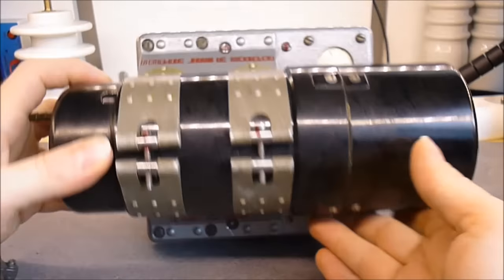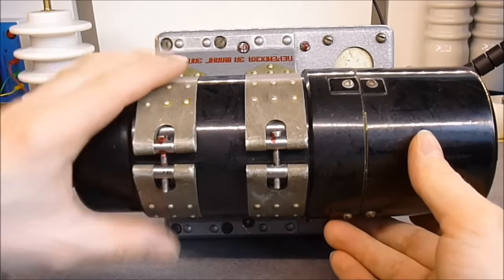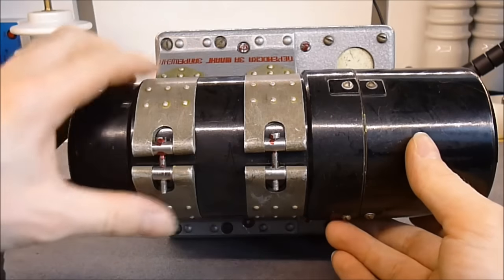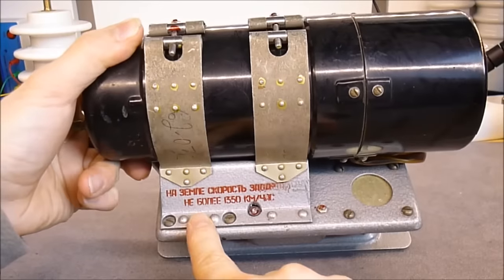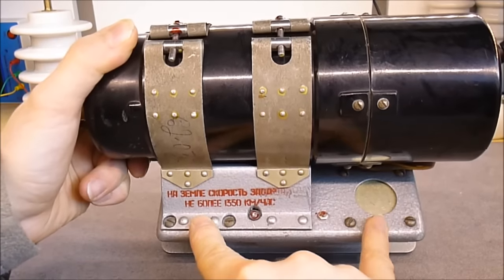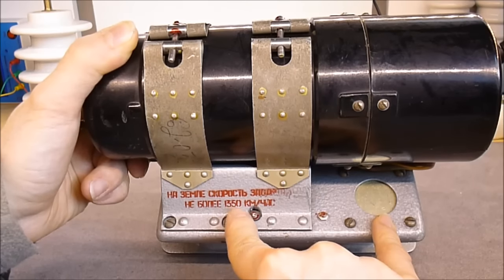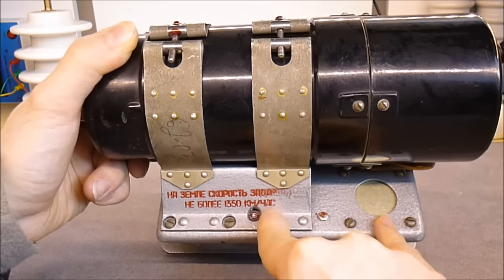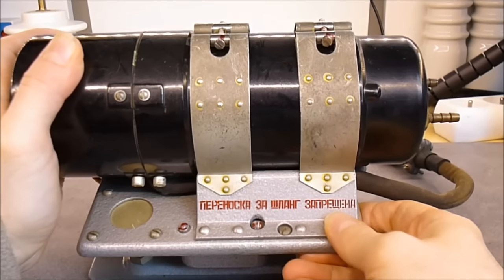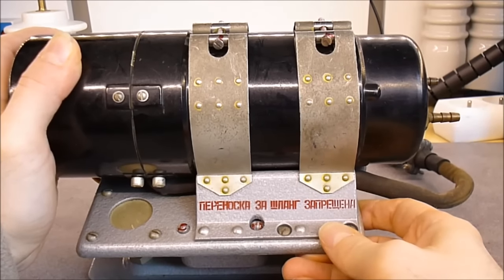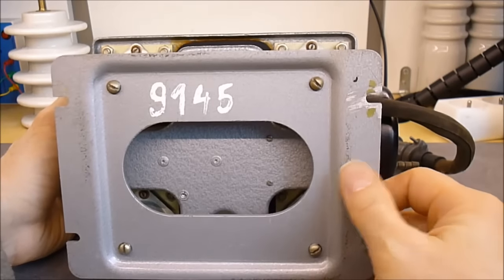So here you can see how the cylinder is attached to the frame with these metal clamps. Here we have some information written in red. It seems it can go up to 1350 kilometers per hour. Another piece of information here. Here you can see the mounting plate to the aircraft.